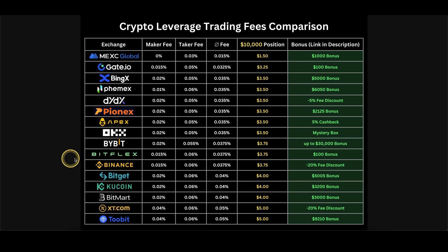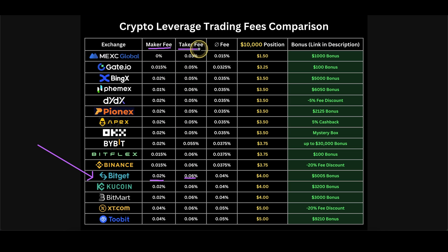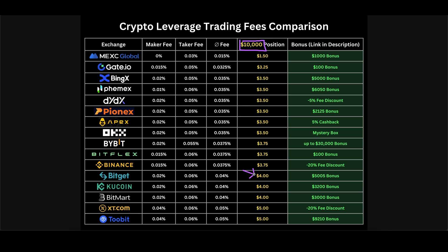Let's take a look at this comparison where we can see BitGet with the 0.02% maker fee and the 0.06% taker fee. I also calculated an average for you which sits at 0.04%, and as an example, if you open a $10,000 position you would have to pay a fee of $4.